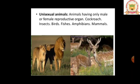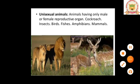For unisexual animals, we use the term dioecious. Animals having only male or female reproductive organ are called unisexual animals. Examples include cockroach, insects, birds, fishes, amphibians, and mammals. In these organisms male and female reproductive parts are present in different individuals. Remember the terms used specifically for plants and animals with their examples. We will continue in Part 6 in the next session.